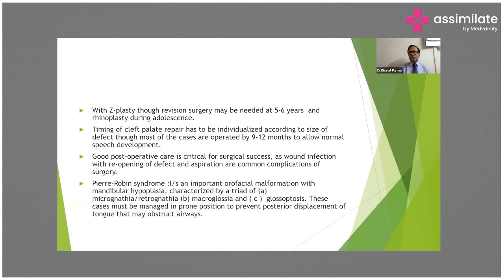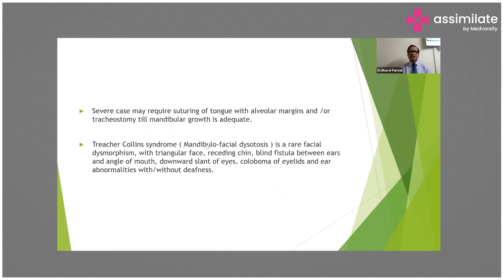Pierre Robin syndrome is an important orofacial malformation with mandibular hypoplasia characterized by a triad: micrognathia or retrognathia, macroglossia, and glossoptosis. These cases must be managed in a prone position to prevent posterior displacement of the tongue and airway obstruction. Severe cases may require suturing of the tongue to the alveolar margin and tracheostomy until mandibular growth is adequate.